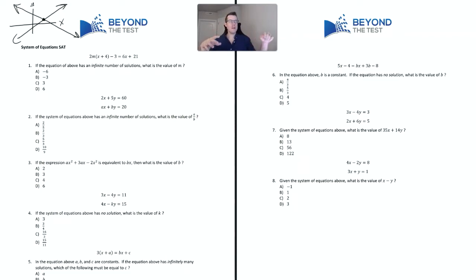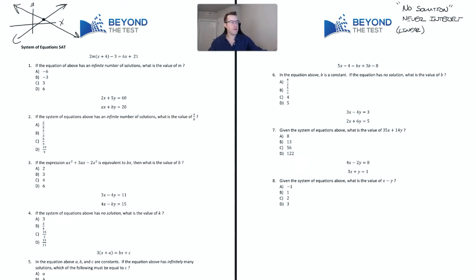What does it mean when a system has no solution? Well, if a system has no solution, that means the lines are never going to intersect. Most of the time on this test you'll be dealing with linear systems — straight lines. The kind of straight lines that never intersect are called parallel lines, and what we know about parallel lines is that they have equal, or the same, slopes.